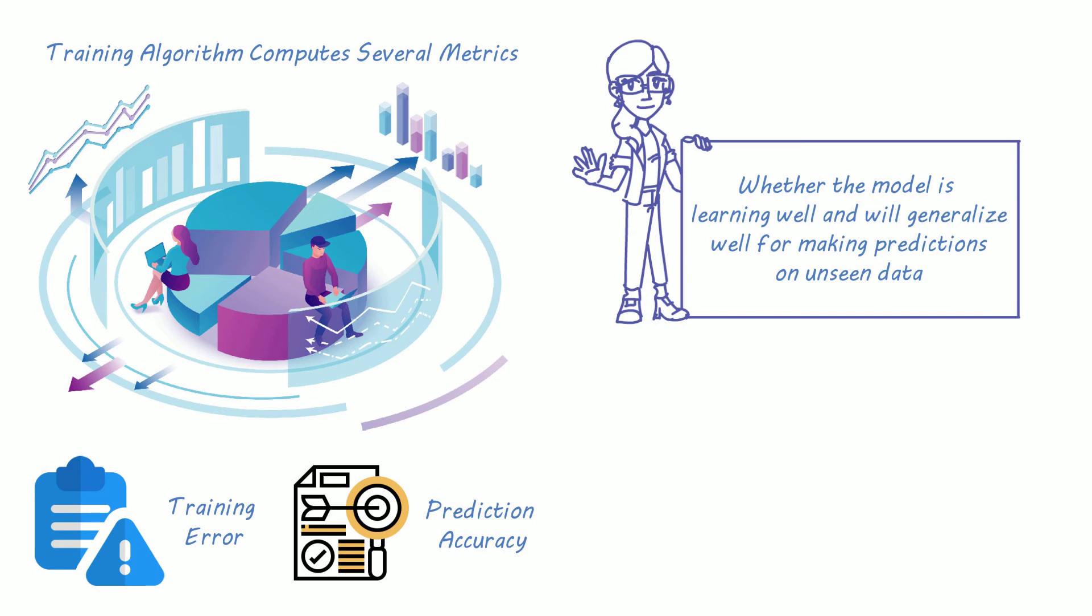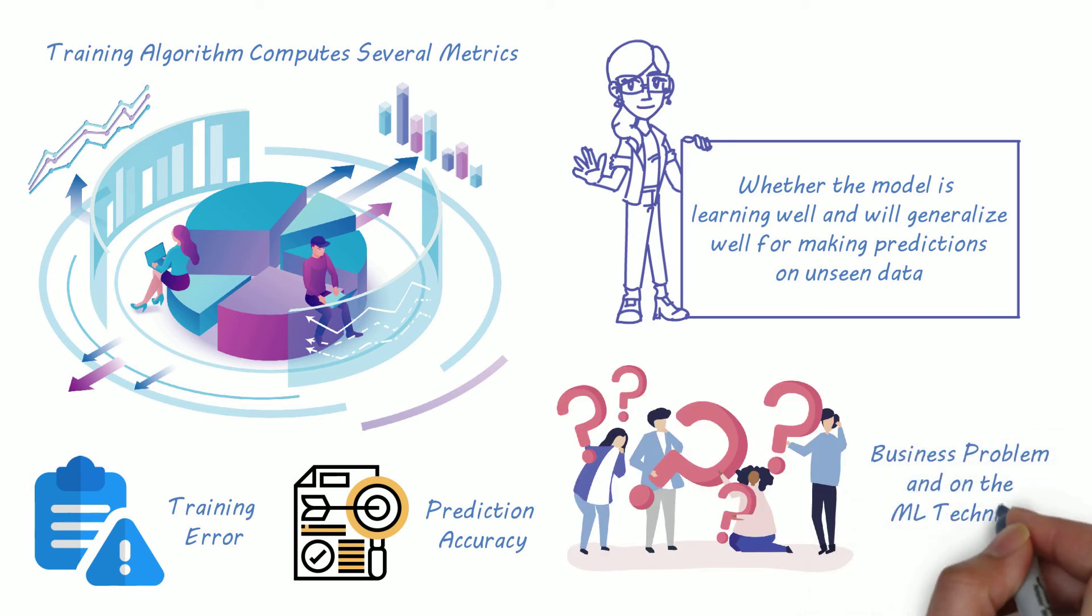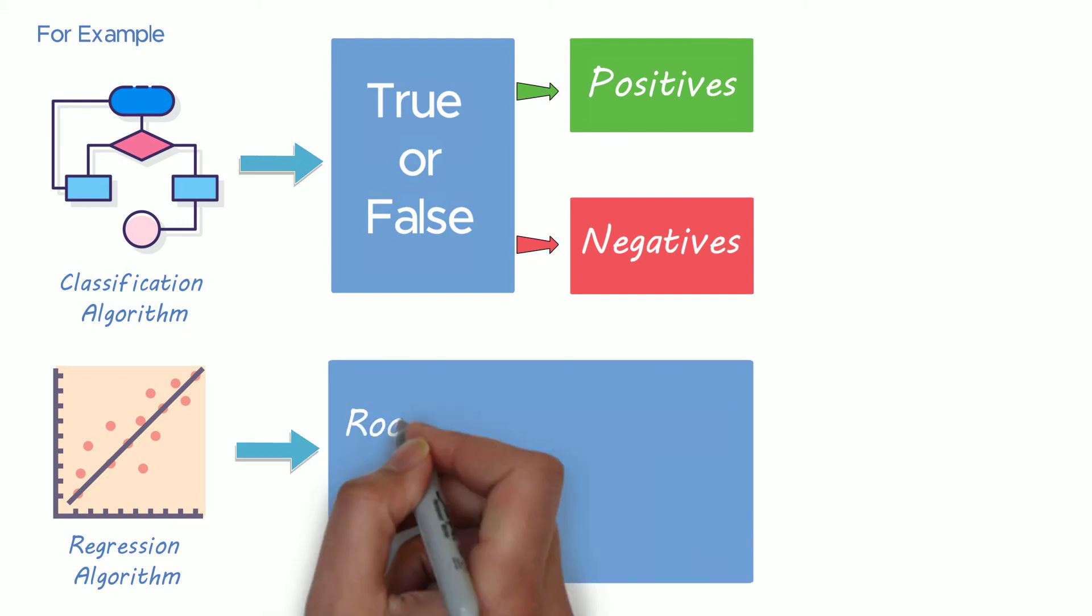Metrics reported by the algorithm depend on the business problem and on ML technique that you use. For example a classification algorithm can be measured by a confusion matrix that captures true and false positives and true or false negatives while a regression algorithm can be measured by root mean square error or RMSE.